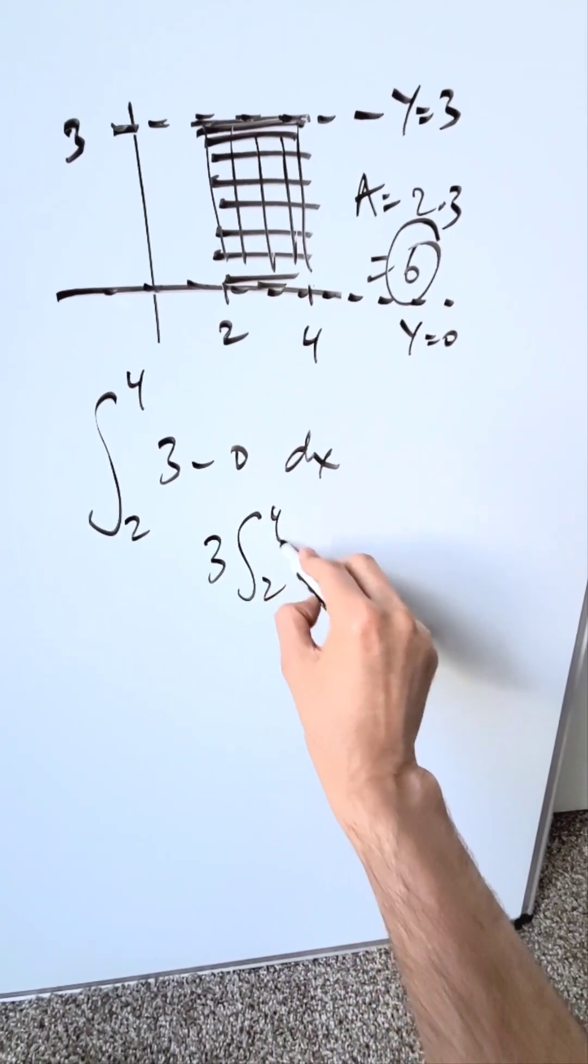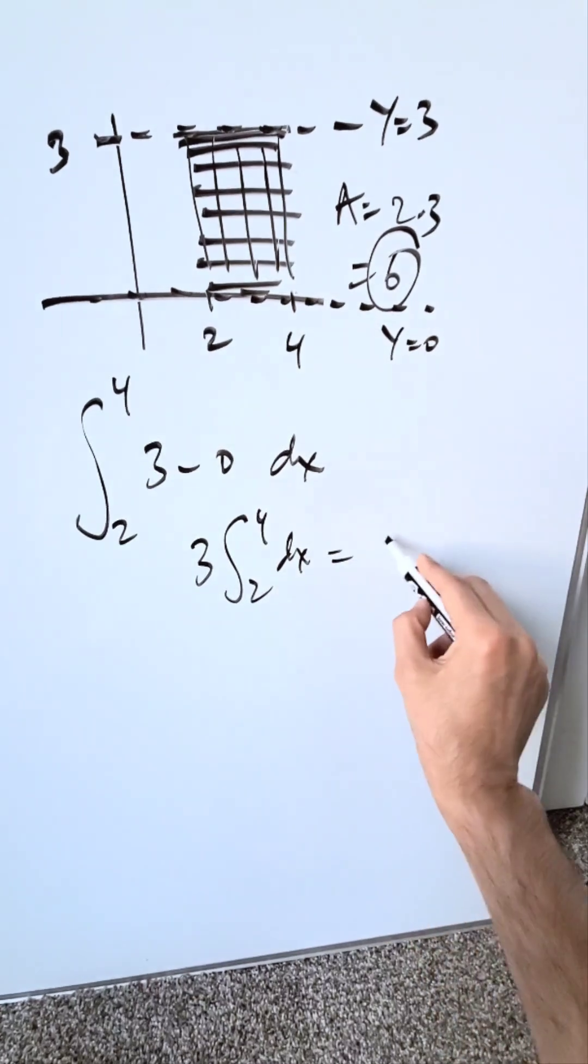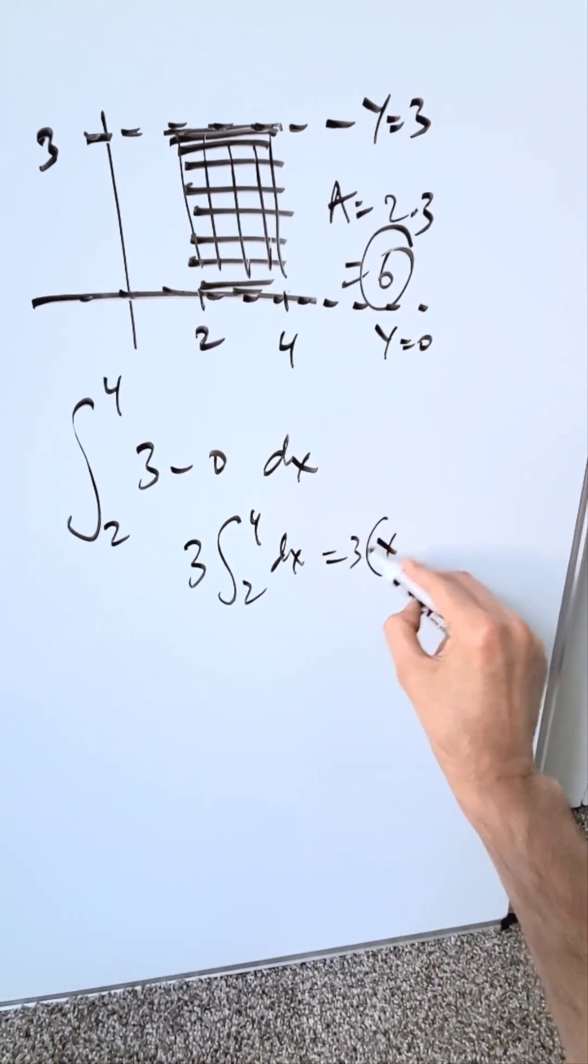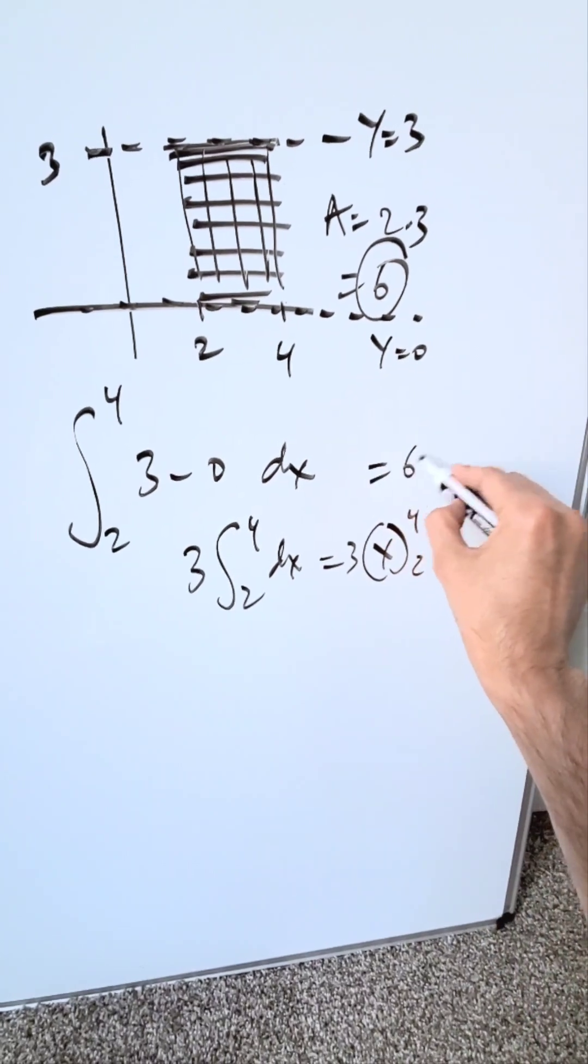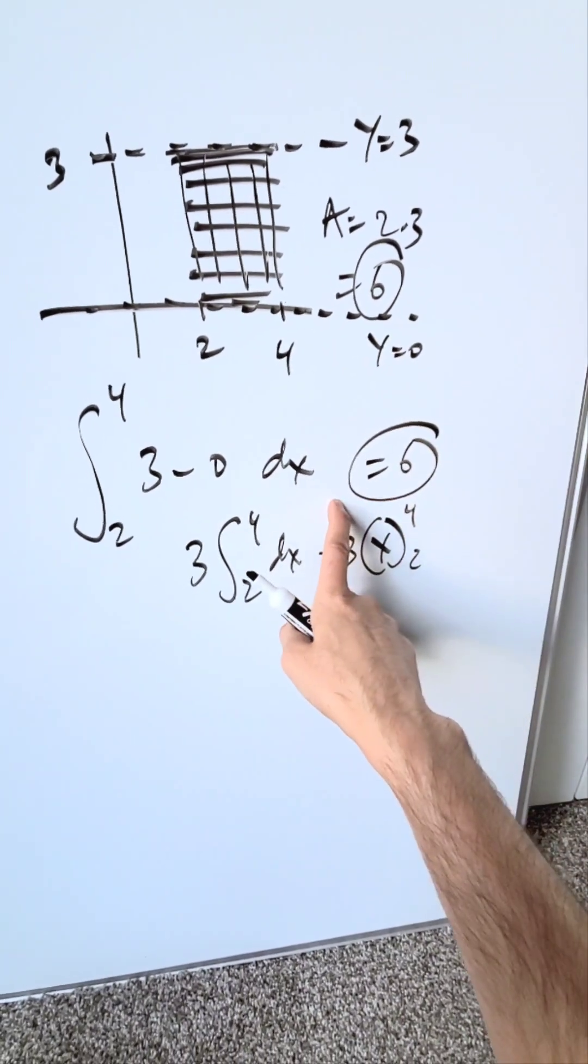We can push the 3 out. I have 2 and 4 dx. When you integrate this, you have an anti-derivative of x. You have a 3 sitting out, you have a 4 and a 2. 4 minus 2 is 2 times that 3. You'll have an area of 6, and that's the single integral route.